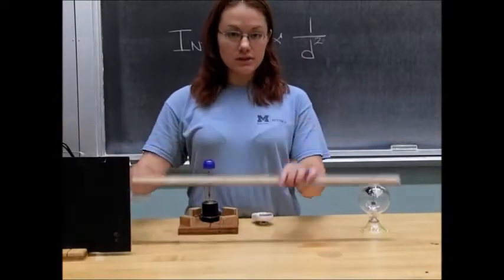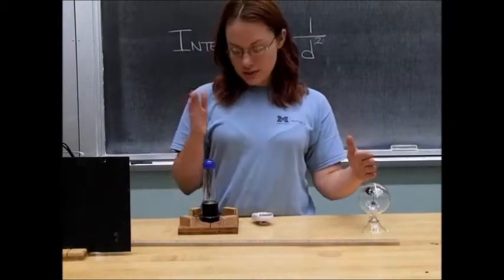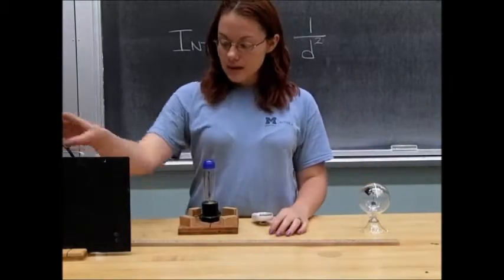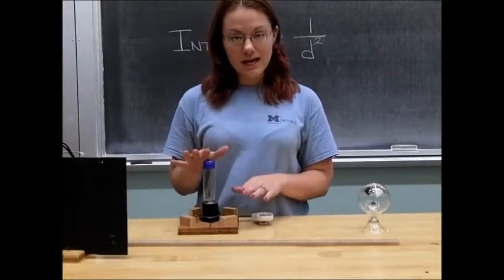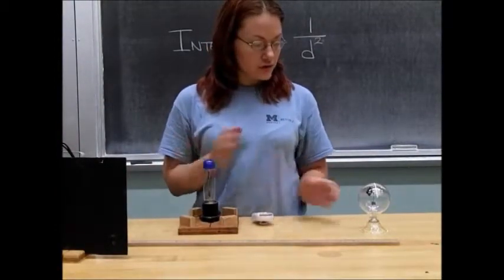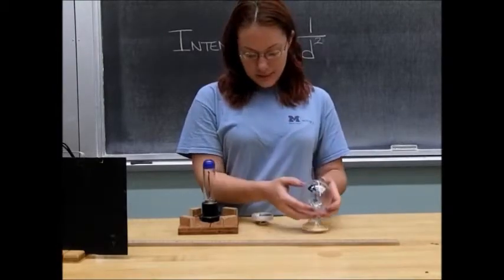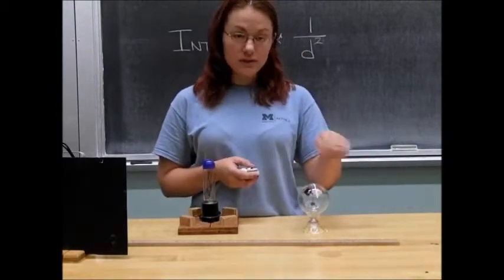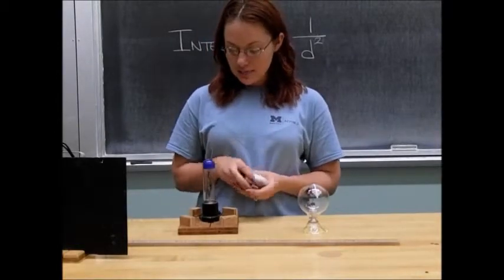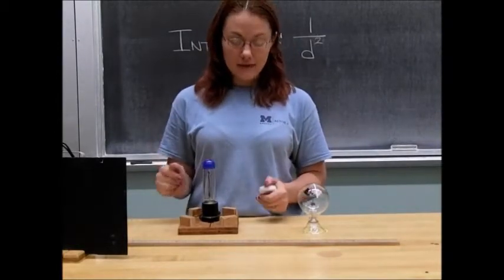We have a meter stick so that we can measure the distance between our detector and our light source. We have a blocking plate to put in front of the light source so that it does not interfere with the viewing of our radiometer. And we have a stopwatch to count the number of rotations that the Crookes radiometer makes in a given amount of time to give us an intensity value.